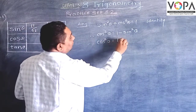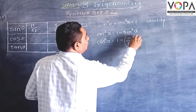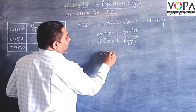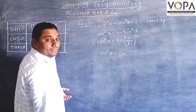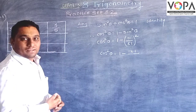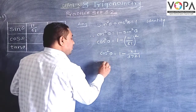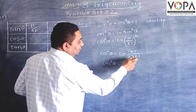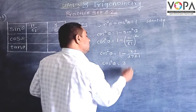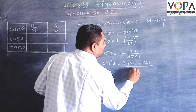So, cos square theta is equal to 1 minus the value of sin theta, which is 11 upon 61, that is squared. Therefore, cos square theta is equal to 1 minus 121 upon 3721. So, cos square theta is equal to 3721 minus 121 upon 3721.